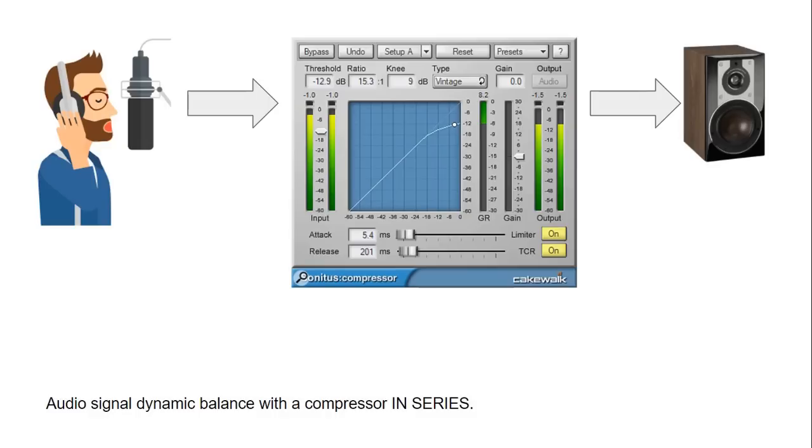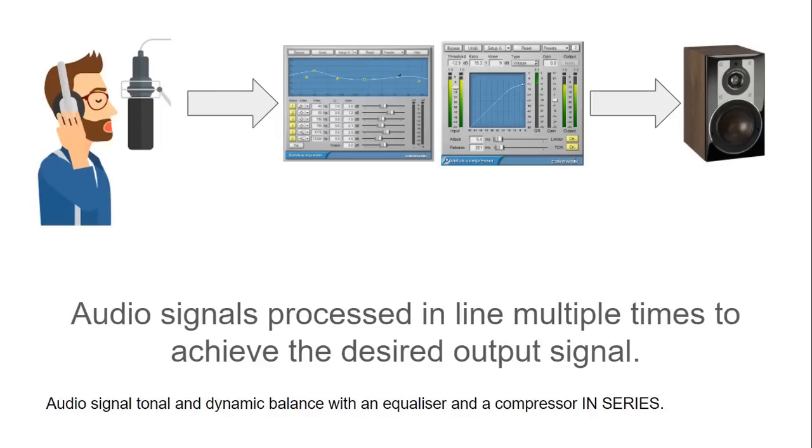In series, audio processing method simply changes the input signal and outputs the modified audio signal to the output stage. We can have multiple audio processing in series. So audio signals are processed in line multiple times to achieve the desired output signal. So we could have a tonal and dynamic balance with an equalizer and a compressor in series.